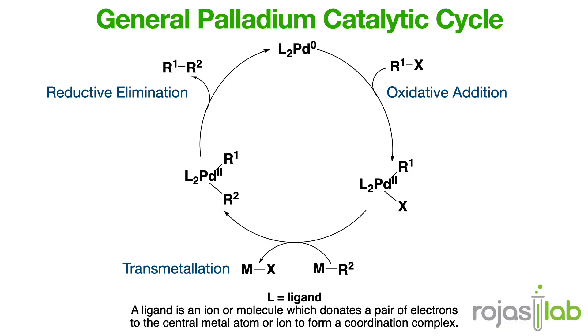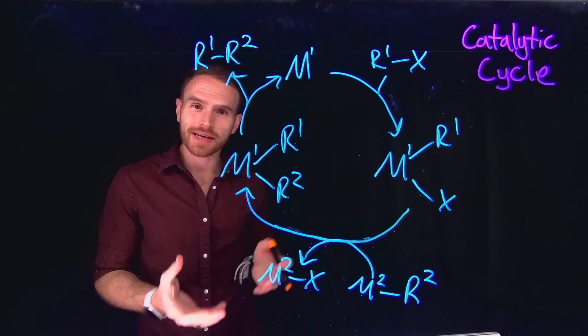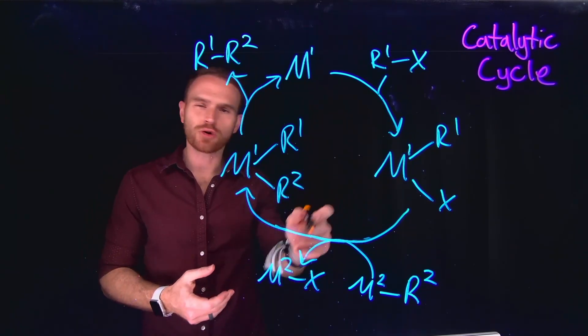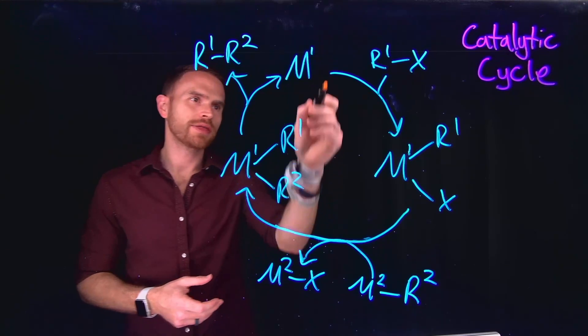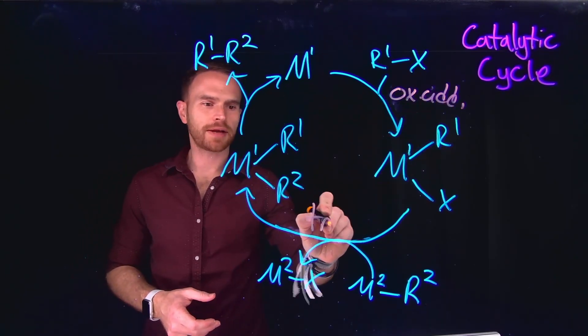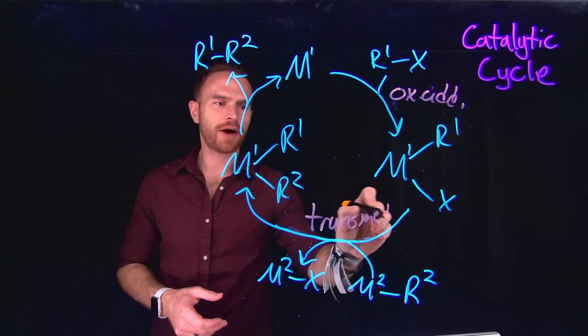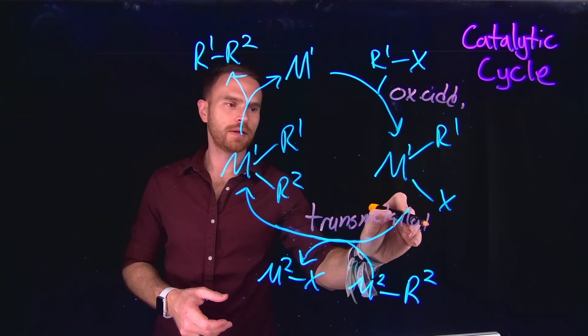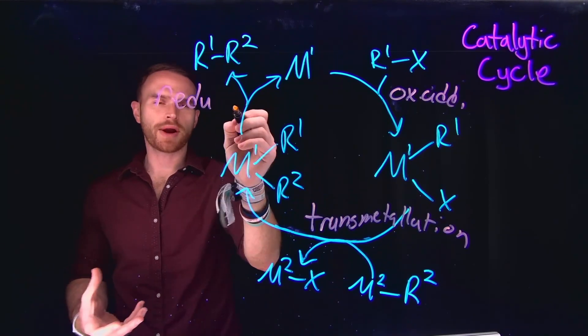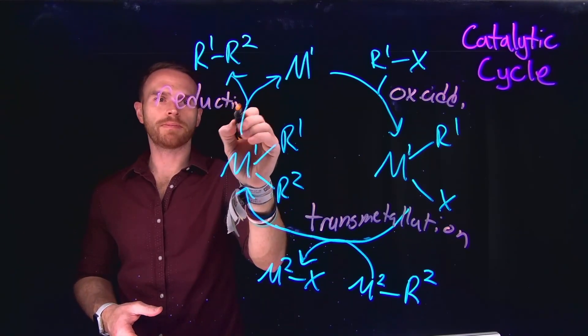Picture this within a catalytic cycle, a catalyst facilitates the conversion of reactants into products through a series of intermediate steps, all while remaining unchanged at the end of the reaction. For palladium catalyzed carbon-carbon bond forming cross coupling reactions, the catalytic cycle is generally relatively similar. The first step is oxidative addition, followed by transmetallation. And then the final step is typically reductive elimination, where you actually produce your brand new carbon-carbon bond.